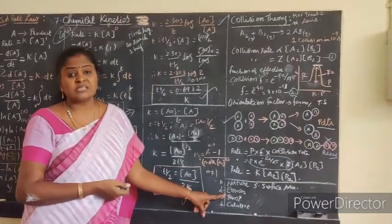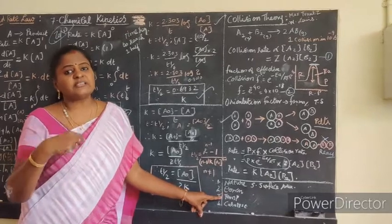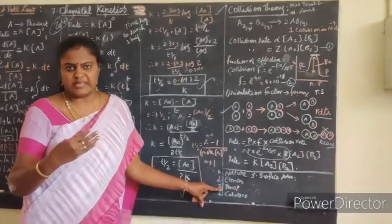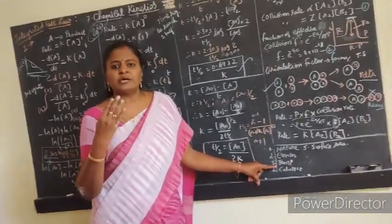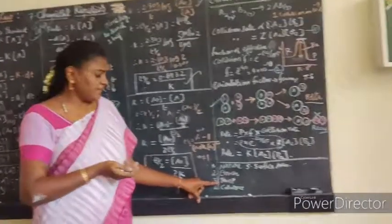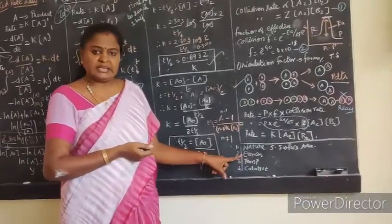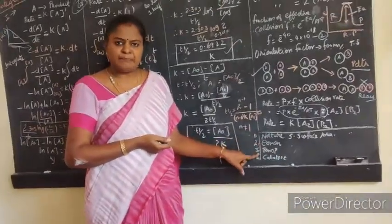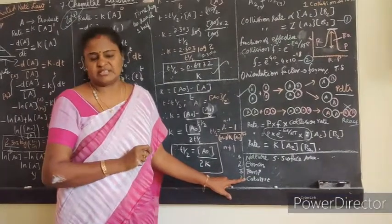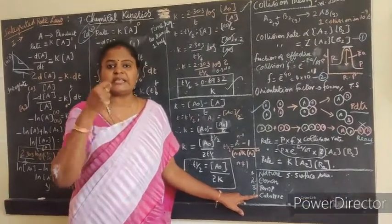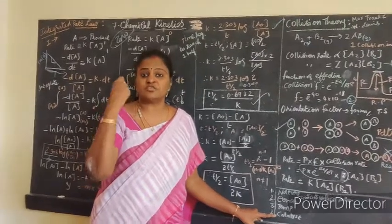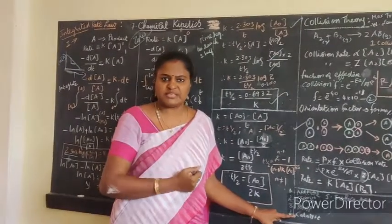Concentration of the reactant: if you increase the concentration, the number of moles increases, more molecules get collisions, and automatically the rate of the reaction will be increased. Temperature: as discussed under the Arrhenius equation, for every 10 degree rise in temperature, the rate of the reaction is going to be doubled.